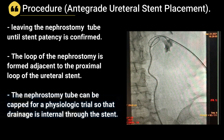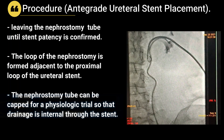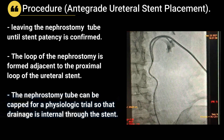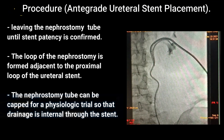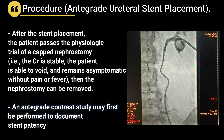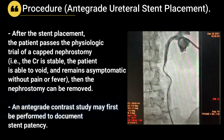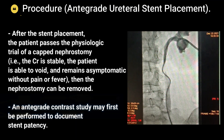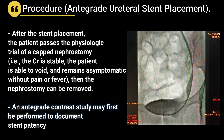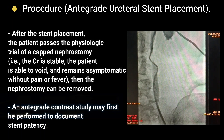The loop of the nephrostomy is formed adjacent to the proximal loop of the ureteral stent. The nephrostomy tube can then be capped for a physiologic trial so that drainage is internal through the stent. After stent placement, if the patient passes the physiologic trial of a capped nephrostomy, the nephrostomy can be removed. Finally, an antegrade contrast study may first be performed to document stent patency.